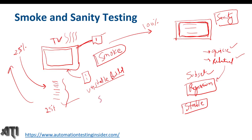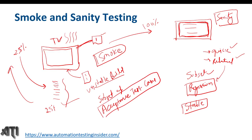Smoke tests are a subset of acceptance test cases — because the build is under development and smoke testing is performed on an unstable build. If critical functionalities work, we accept the build for further testing; if they don't, we reject and revert it. Smoke testing tests are mainly scripted because they are part of acceptance test cases, often automated. Sanity tests are not scripted — we randomly do quick functionality checks.